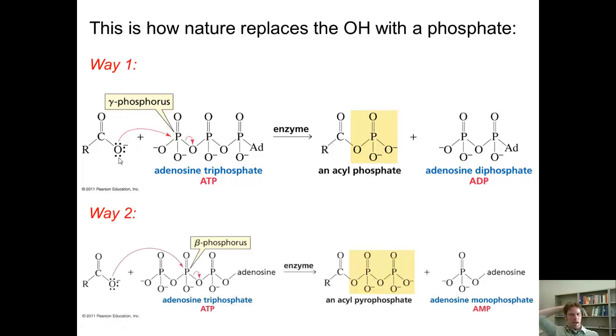An alternative way of replacing an OH with a phosphate group is by taking this deprotonated carboxylic acid and having it attack the central phosphorus atom in ATP. This releases adenosine monophosphate and replaces the OH with a pyrophosphate group. A pyrophosphate group is also a much better leaving group than an OH.